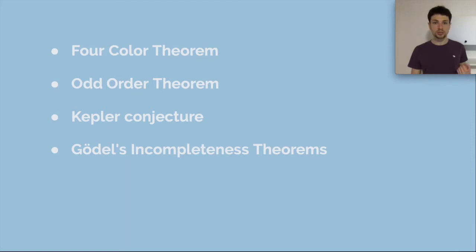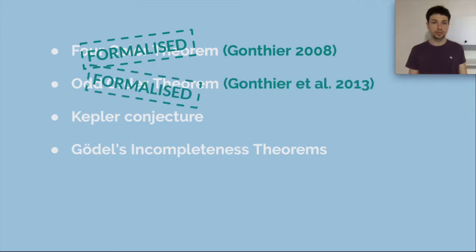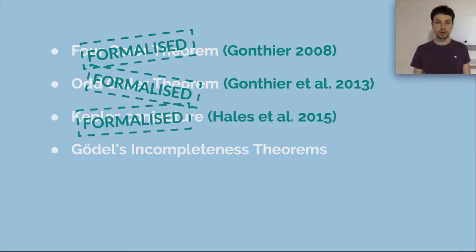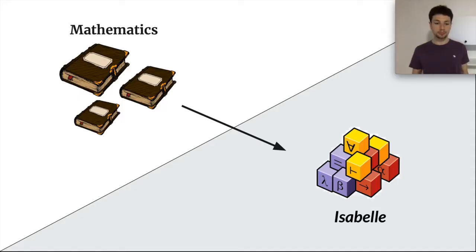Now you may ask what's the relevance of a formalization result. Because in the past years, we have seen a lot of profound mathematical statements being formalized. Here I list just a few: the four-color theorem, formalized by Gonthier; the odd-order theorem by the Mathematical Components project; the Kepler conjecture by the Flyspeck project; and Gödel's incompleteness theorem by Poisson. And as I said, there are many more. The relevance of any formalization comes from the issues that we find when we translate mathematics to a formal system.